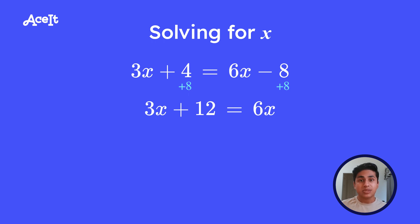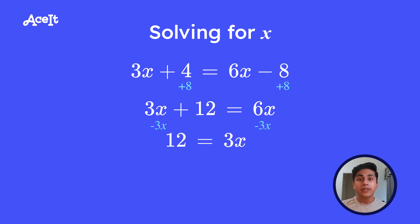Now that the constants are combined, let's combine our coefficients and subtract 3x on both sides. When we do that, we're left with 12 equals 3x. Now we just solve for x by dividing by 3 on both sides, getting x is equal to 4.